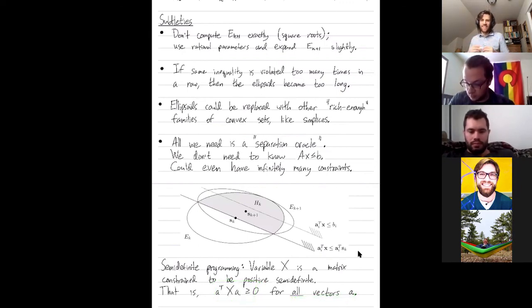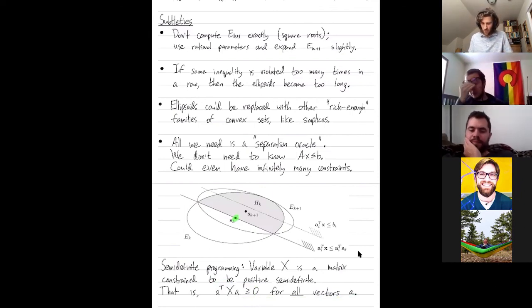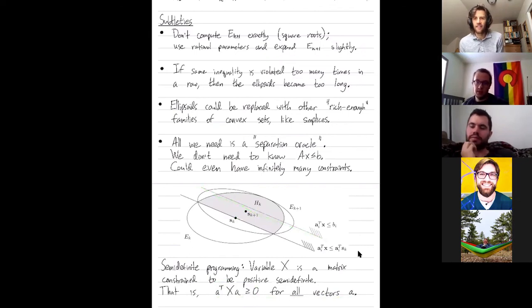And if your current matrix is not yet in the feasible region, if it's not positive semi-definite, your oracle gives you some separator, which is determined by some vector a, violating that inequality.